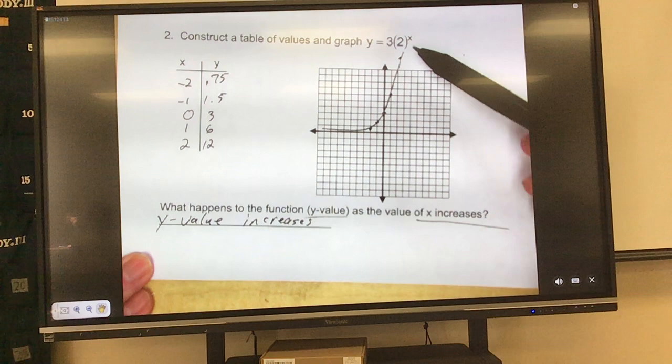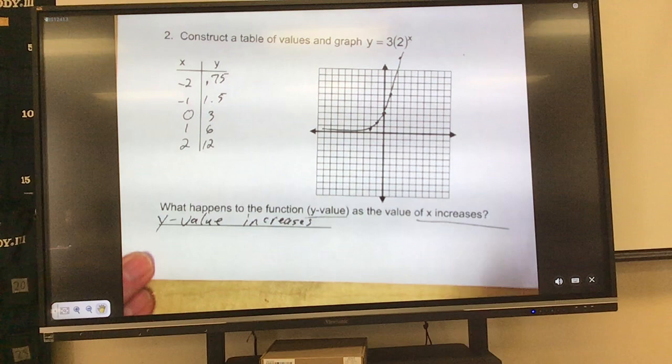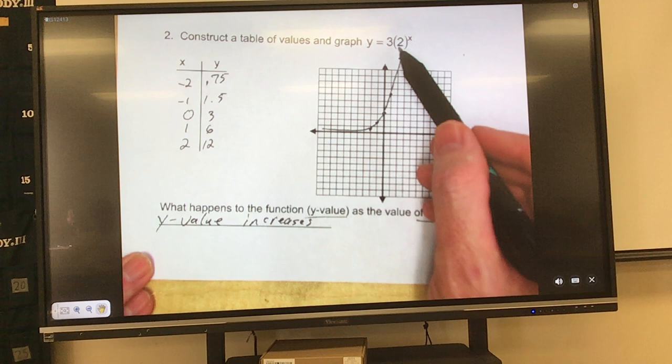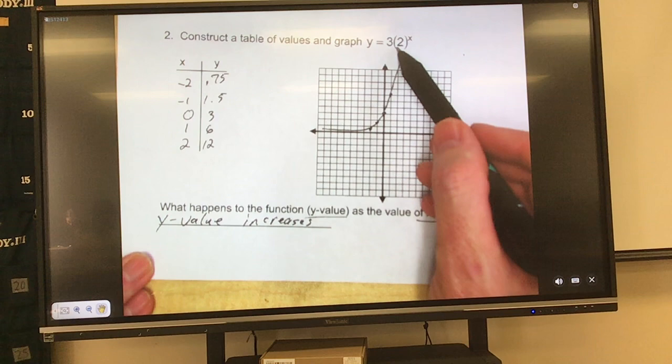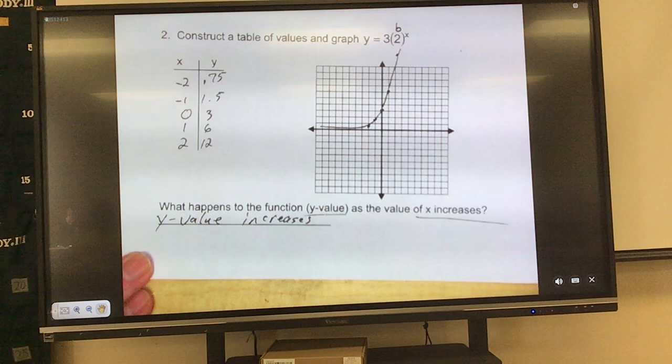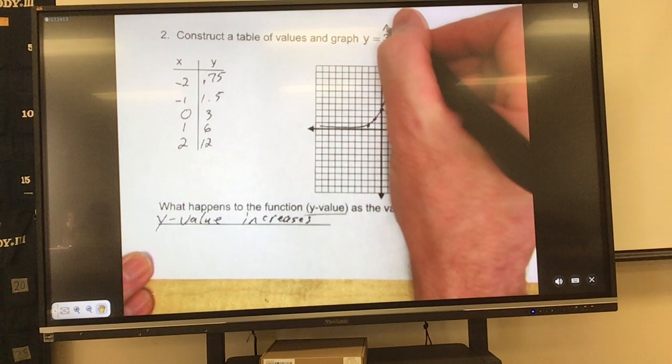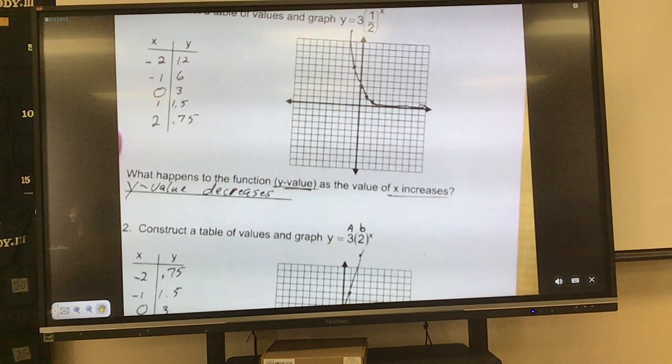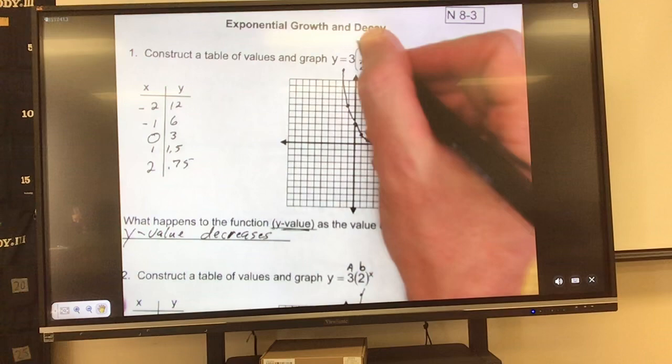Look at number 2, for example. What's being raised to the x power? What is actually touching the x power? Which number? 3 or 2? Which one of these guys is actually touching the x power? 2. So we're going to label this guy with a lowercase b. The number in front, we're going to label it with an uppercase a. So now, with that same knowledge, what's touching the x up here? 1 half. So I'm going to put a lowercase b right there. And over that 3, I'm going to put an uppercase a.